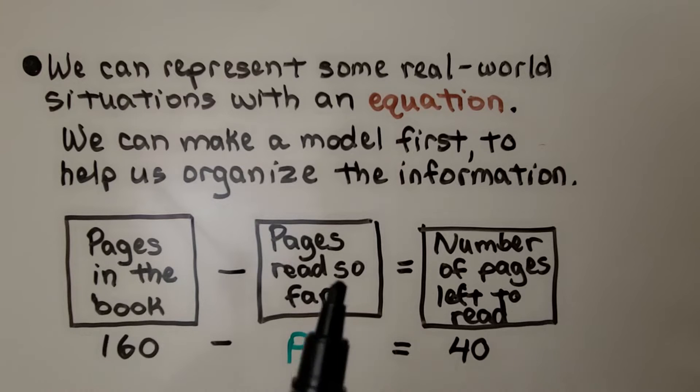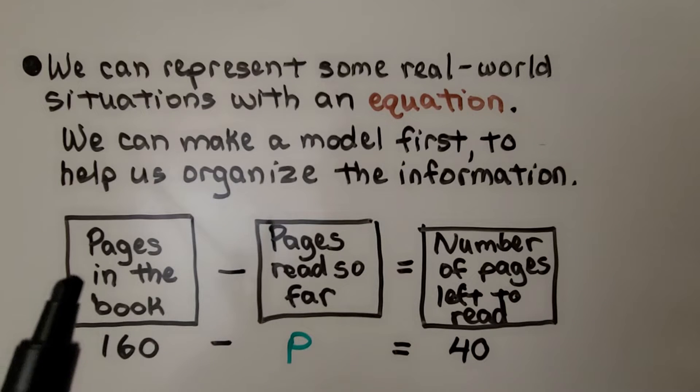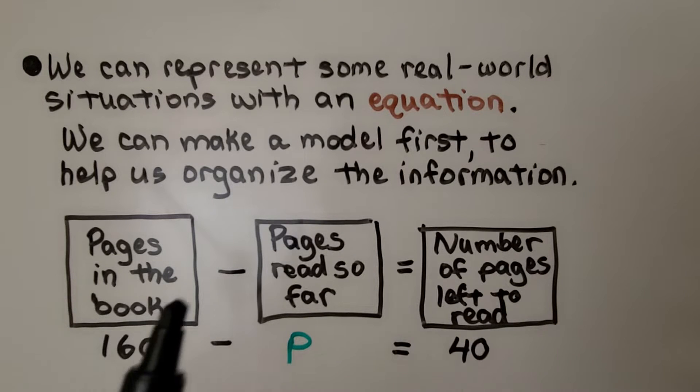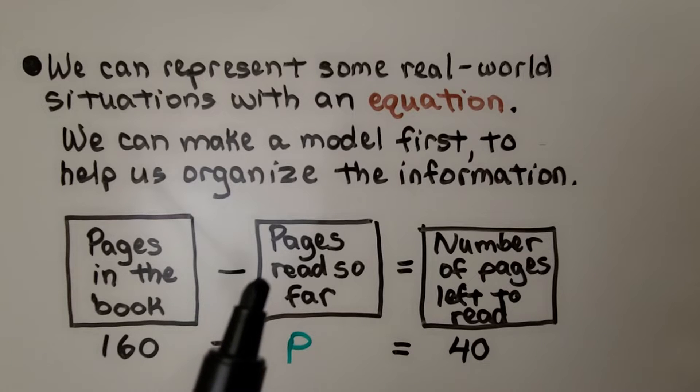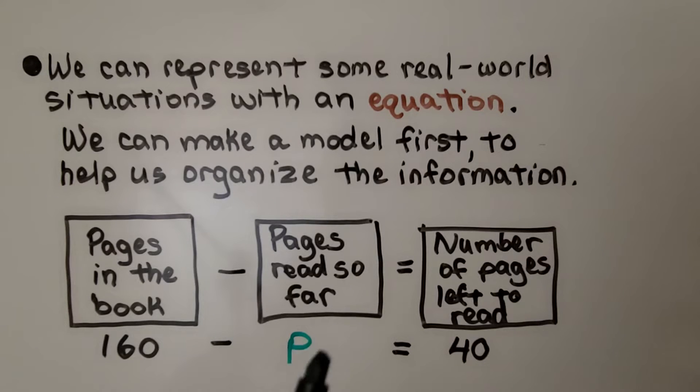So our model is these boxes. We have the number of pages in the book, 160. If we subtract the number of pages read so far, which we have no idea how many they are, so we're going to put a P for pages, it will equal the number of pages left to read, which we do know is 40.